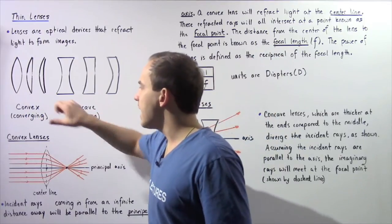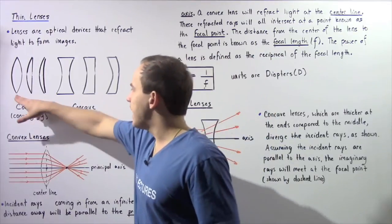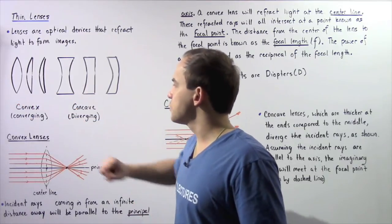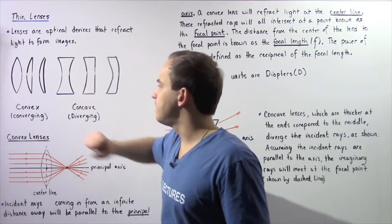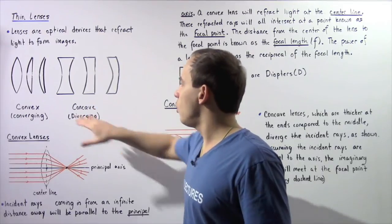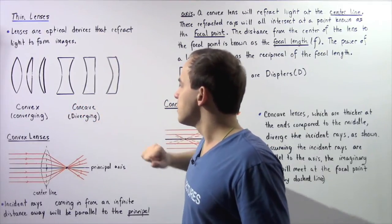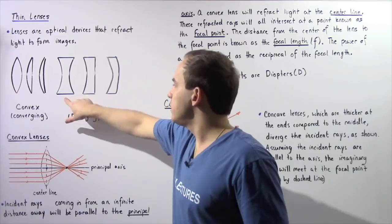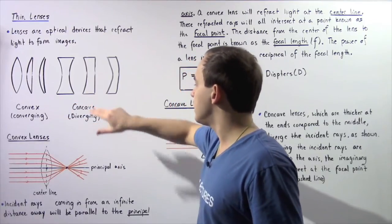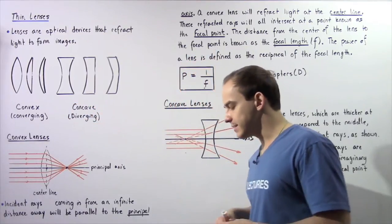Three types of convex lenses exist: the double convex, the planoconvex, and the convex meniscus. The concave lens also comes in three types: the double concave, the planoconcave, and the concave meniscus.